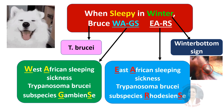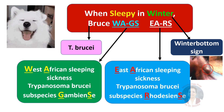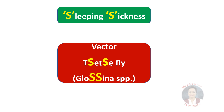Now, how do we remember the vector of sleeping sickness? Pick up the first two letters of 'sleeping sickness' — there are two S's. The vector is the tsetse fly, which also has two S's, and belongs to the genus Glossina, which also has two S's. Notice all of them have two S letters in their name.